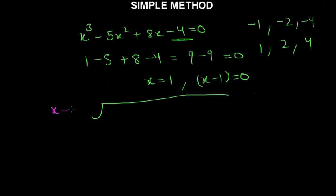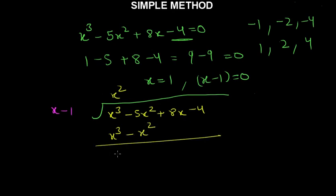I will write x minus 1 here and the equation here, which is x³ minus 5x² plus 8x minus 4. Now we will divide it. First dividing by x² we get x³ minus x². This becomes minus 4x² plus 8x minus 4.